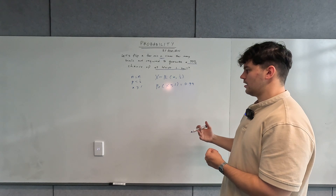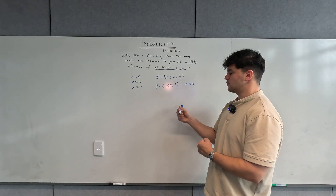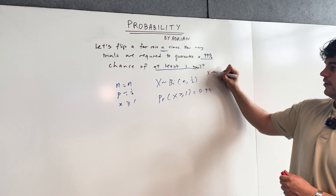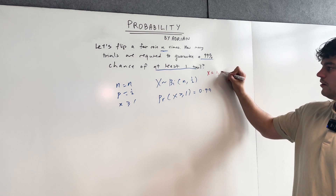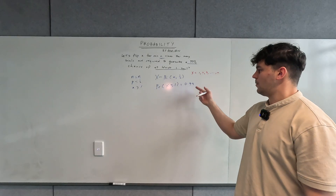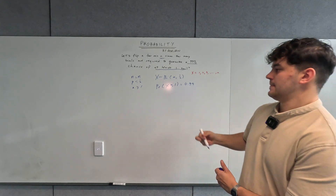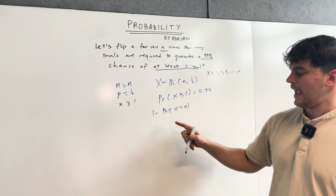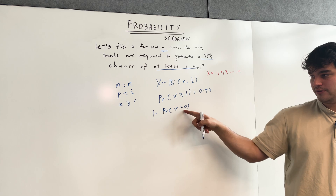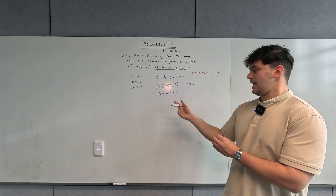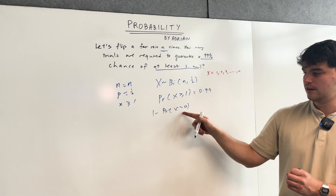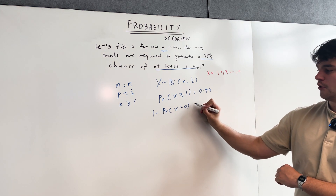There's a problem with x greater or equal to one: the possible values for x are one, two, three, all the way up to n. We don't know where this inequality stops, so we can't evaluate it in terms of n in this form. Instead, we use the complement: one minus the probability that x equals zero. Regardless of what n is, x greater or equal to one is always the complement of x equal to zero — it doesn't matter if n equals three or n equals 100.